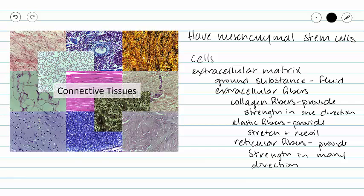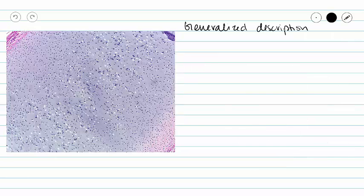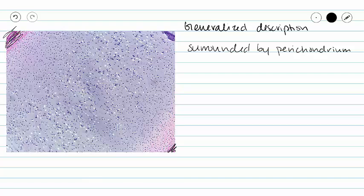Let's dive into cartilage and talk about hyaline cartilage. When we look at cartilage, we are going to have some unifying characteristics. All cartilage is surrounded by a perichondrium, which is a dense irregular connective tissue covering. We can see a little bit of our perichondrium on these sides here. When we look at cartilage, we are always going to see lacunae — with an 'e' on it, lacunae is plural, and lacuna without the 'e' is singular. Lacunae are spaces within the cartilage that house our specialized cell type, which is a chondrocyte.